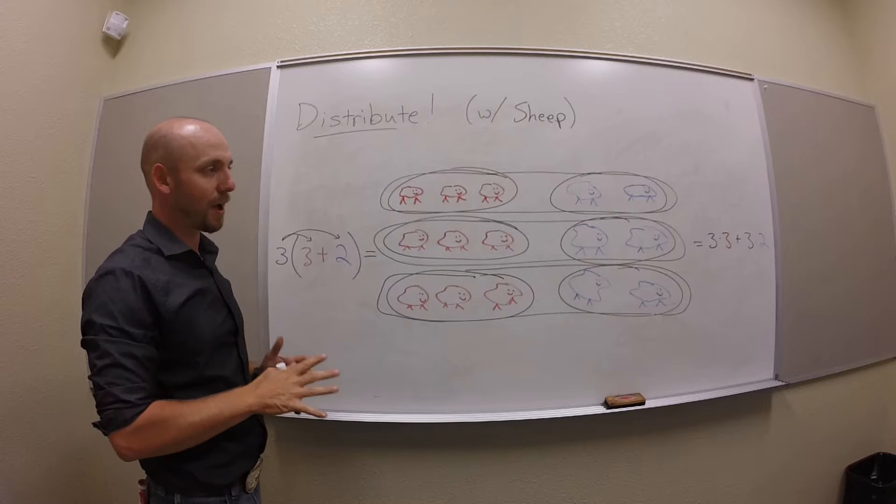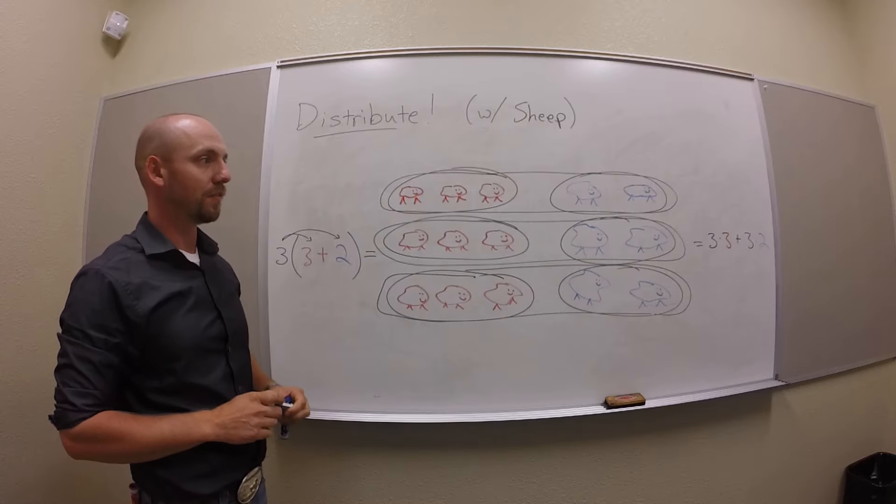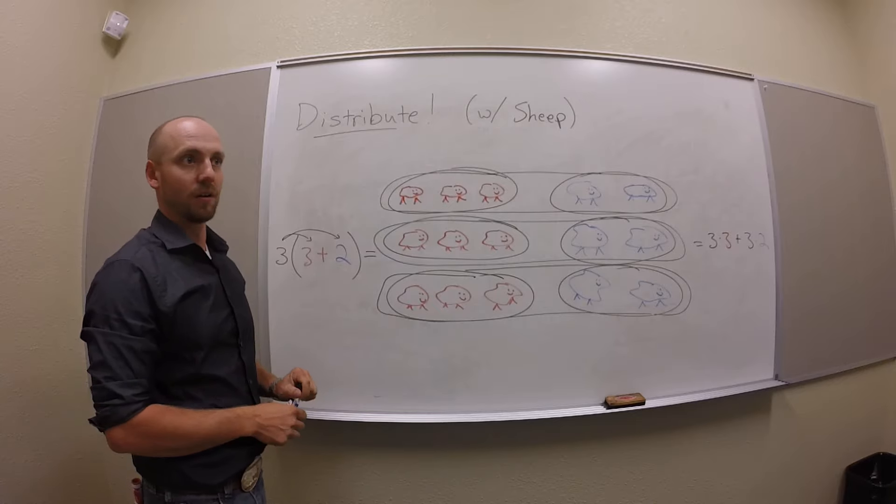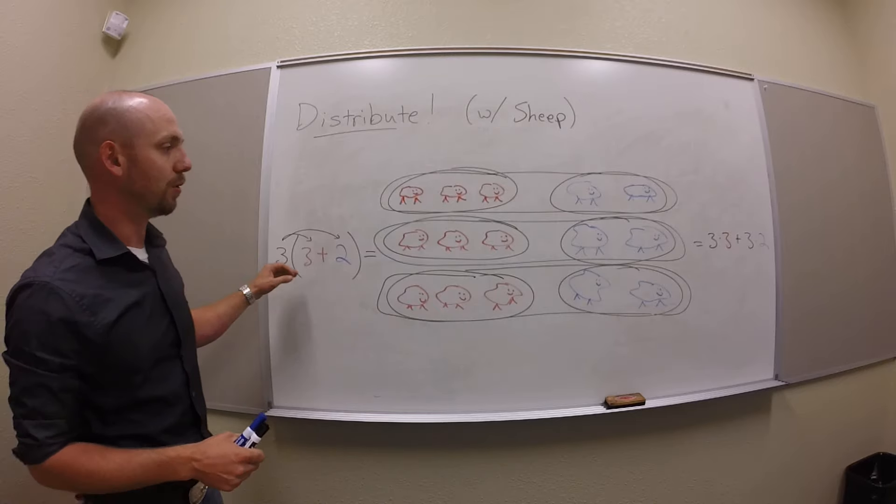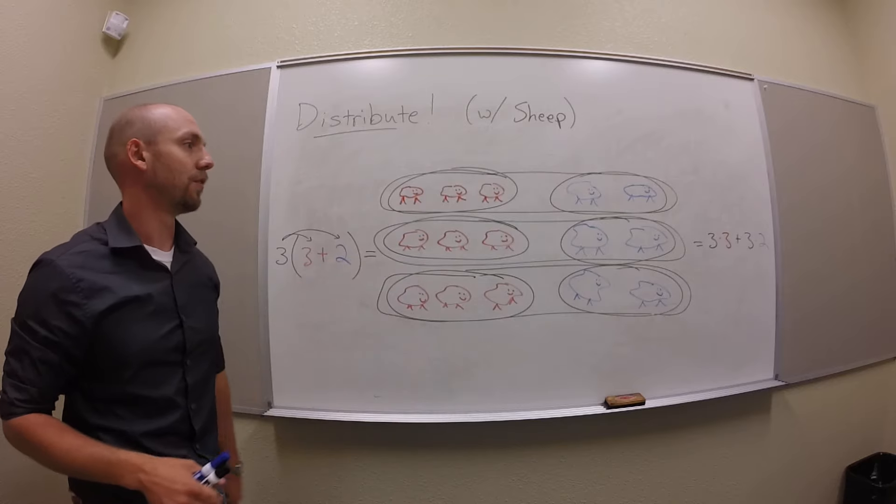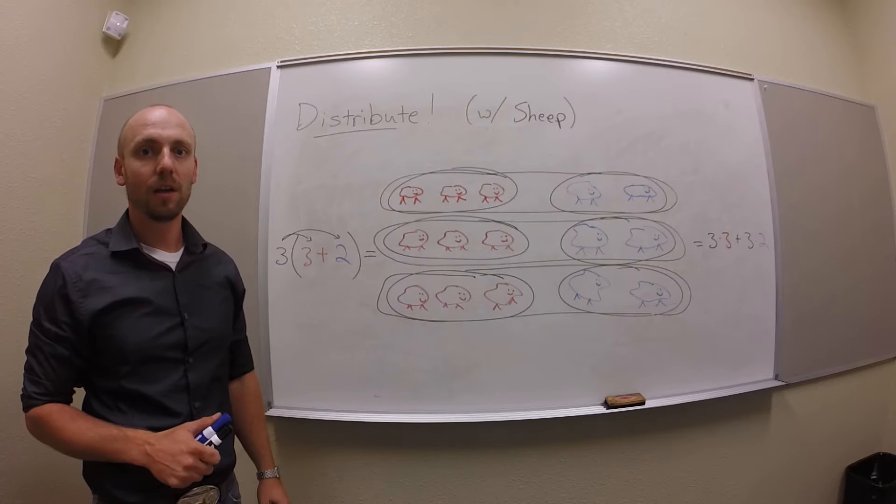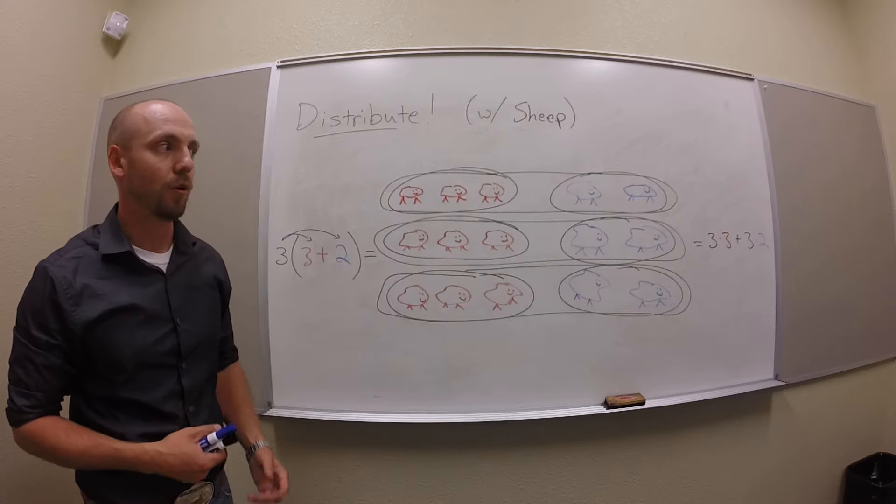So distributing is not magic. I just want to be totally clear that this is something that has to happen because of the way we think about multiplication, right? We think about multiplication as groups of things. And here's a picture that illustrates that we have to be able to do distributing if our concept of grouping is going to work.